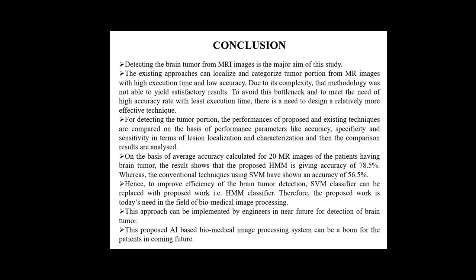In conclusion, based on average accuracy calculated for 20 MR images, the proposed HMM gives an accuracy of 78.5%, whereas the conventional technique using SVM achieves an accuracy of 56.5%. Hence, to improve efficiency and reduce computation time, the SVM classifier can be replaced with the HMM classifier. This approach can be implemented by engineers in the near future for detection of brain tumor.